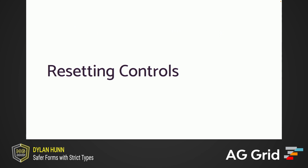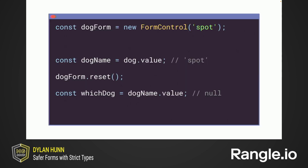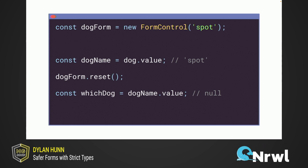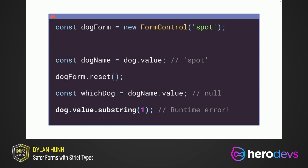One of the trickiest backwards compatibility issues with typed forms relates to resetting controls. Consider the simplest possible form — a single control containing a string. We might expect the type to be FormControl of string, but the tricky detail is that when you're working with a form control, you can call reset at any time, and when that happens, the control will immediately become null. So you can't always assume the value is a string. In previous Angular versions, this example would crash at runtime because you can't call substring on a null value. Angular now protects you from these kinds of errors because the type of the value will be inferred as string or null, and TypeScript enforces that you handle the null case.